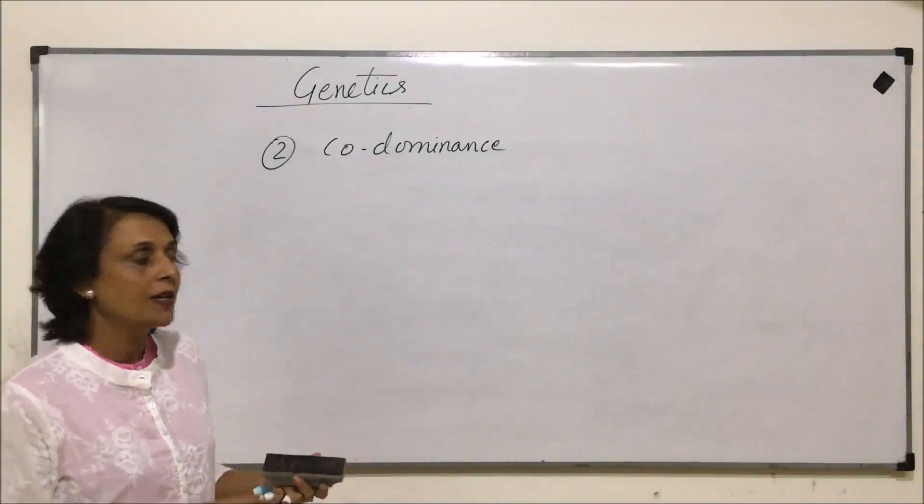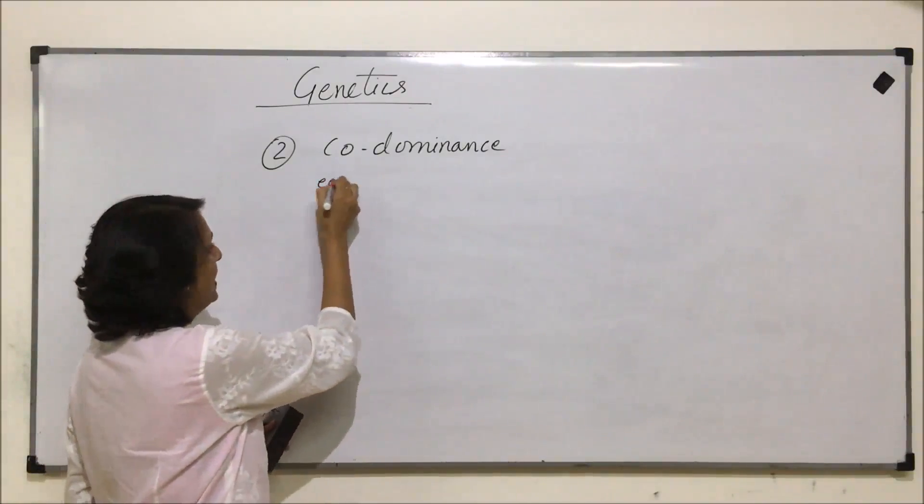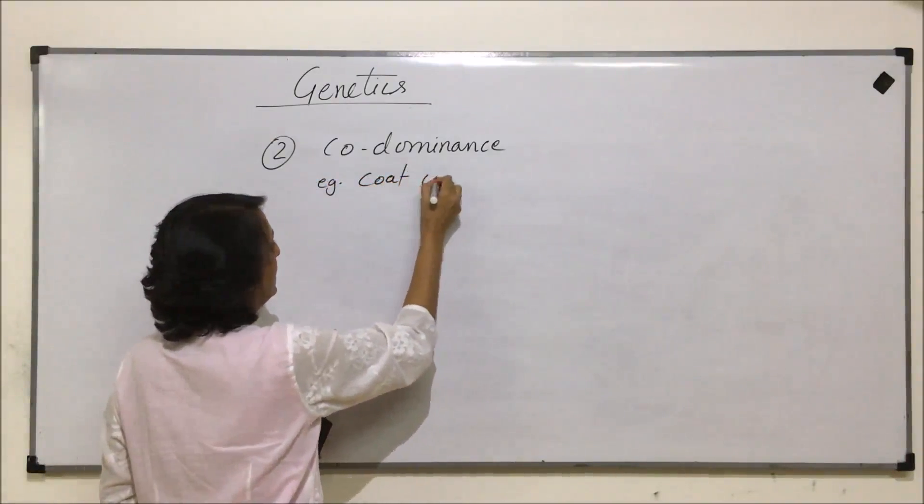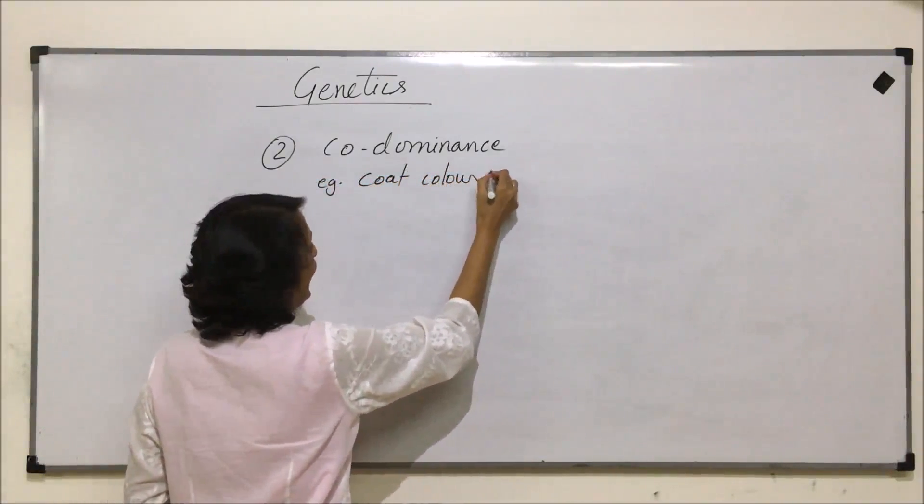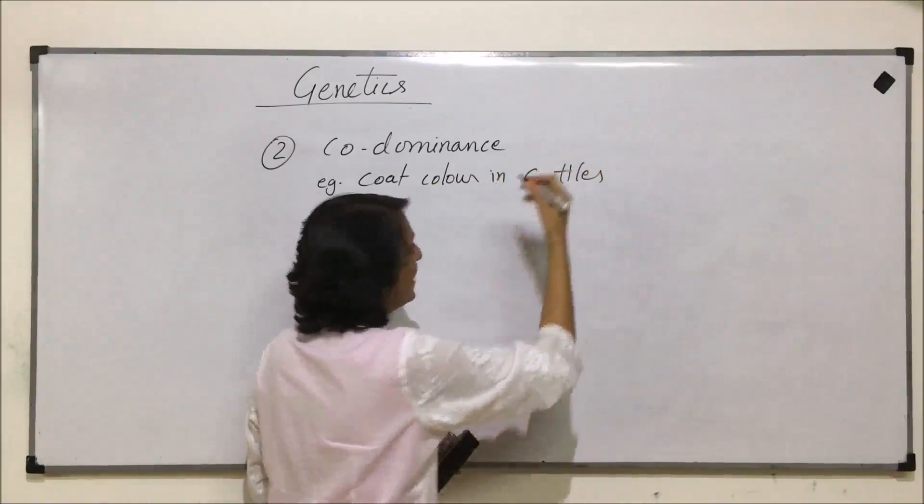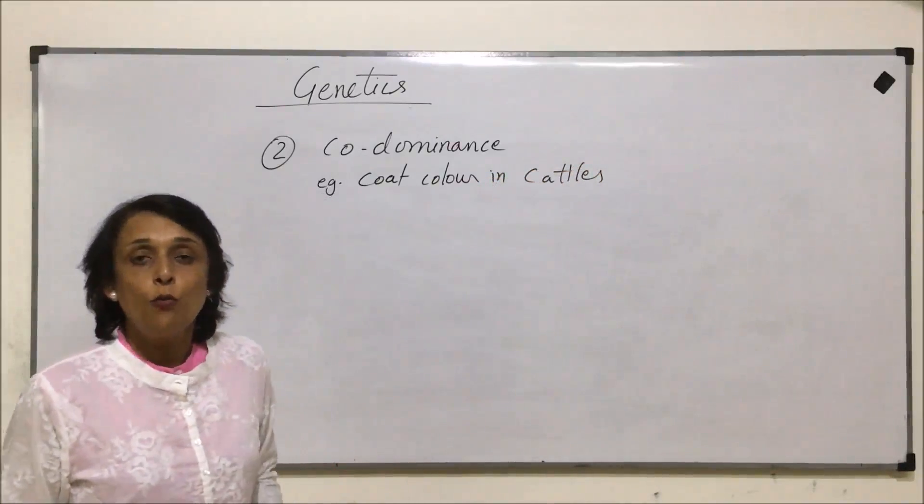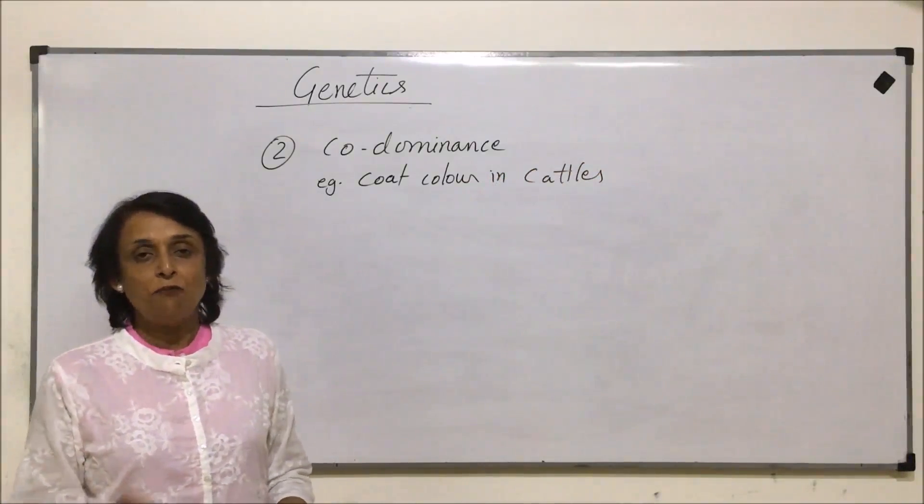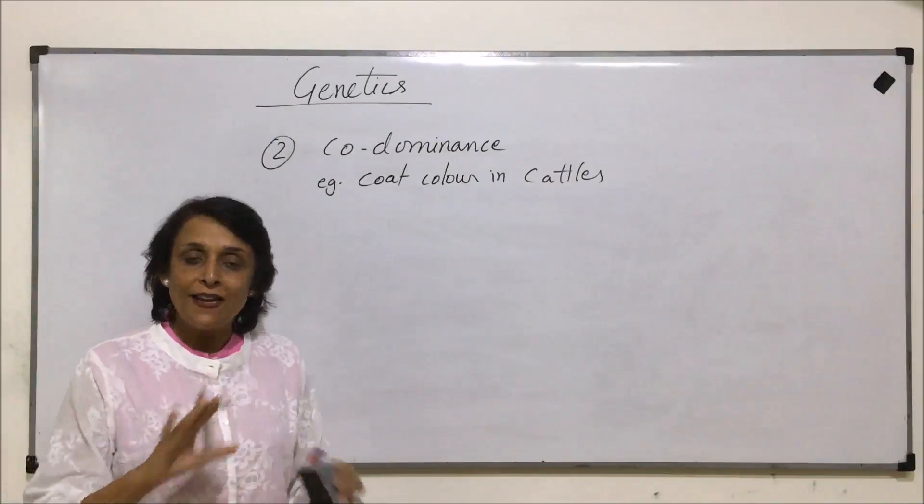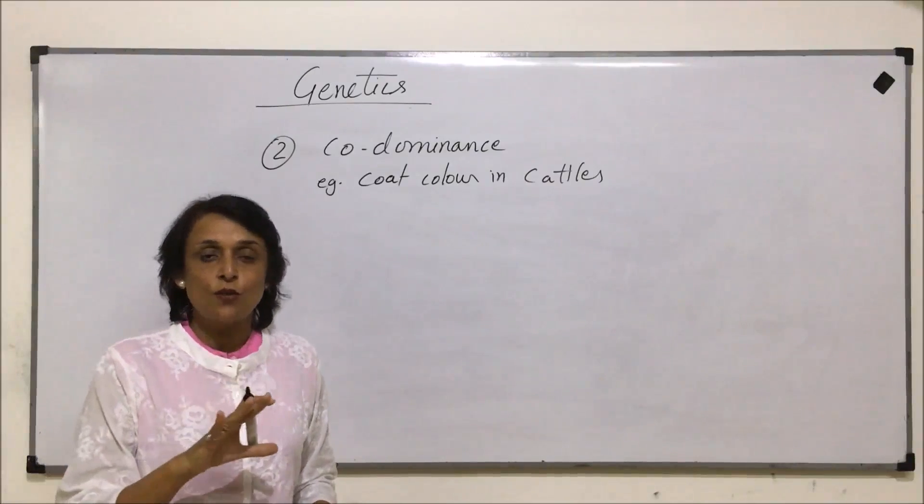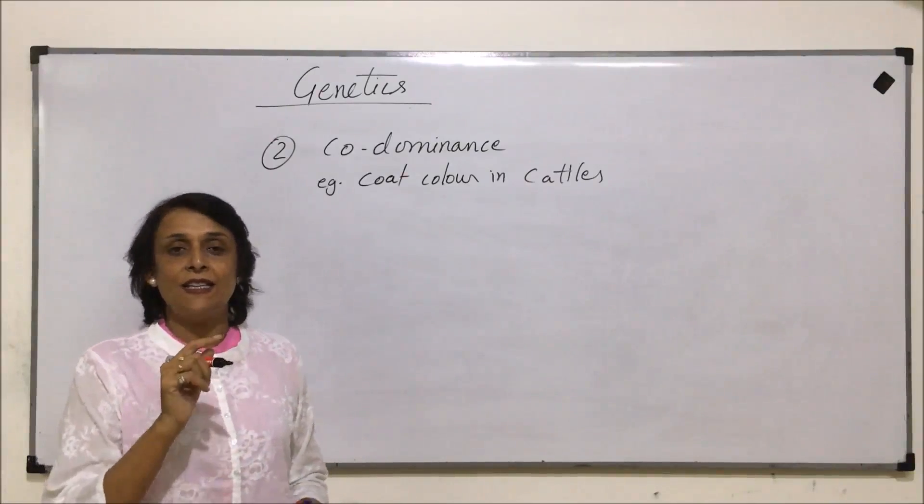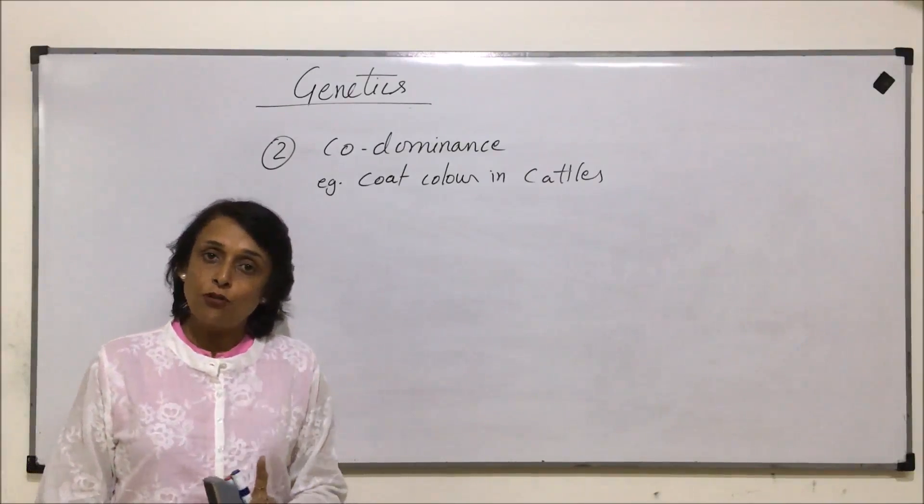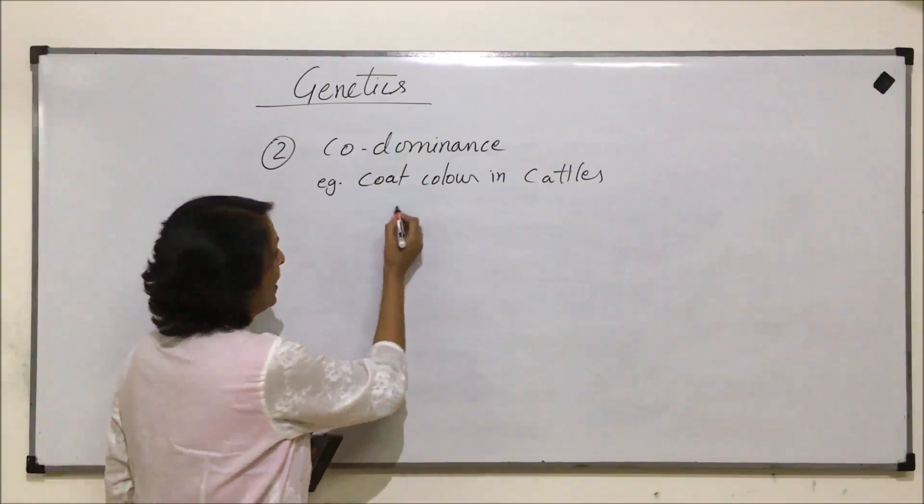Let us talk of coat color in cattle. We have seen cows with colored patches on their skin. If the skin is white, there are patches of black. That means white is also expressing itself and black patches are also expressing themselves.